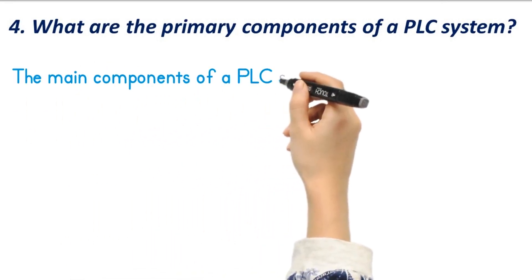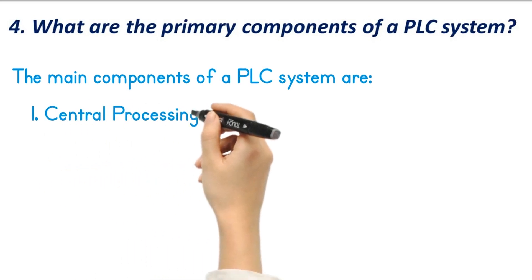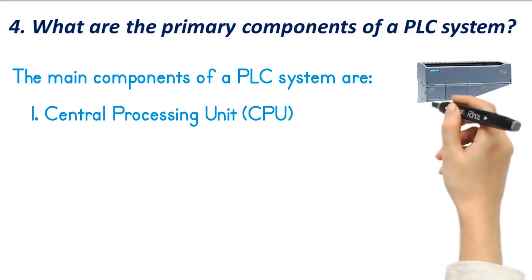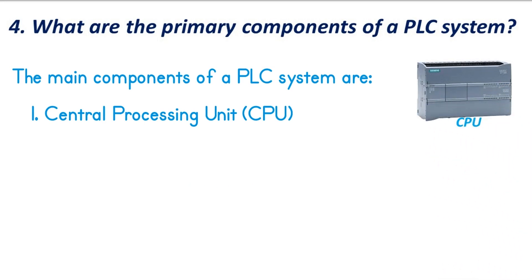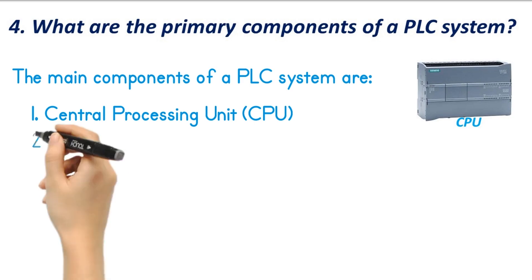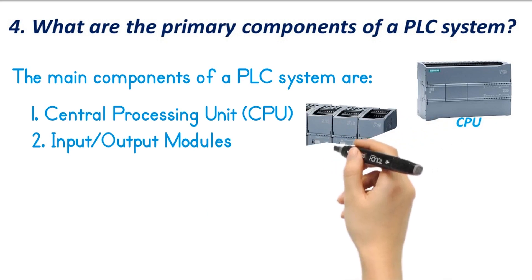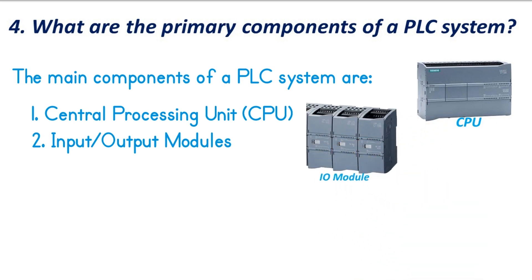The main components of a PLC system are: Central Processing Unit or CPU — the brain of the PLC, which executes the user program, processes inputs, generates outputs, and manages communication with other systems. Input-Output Module — input modules receive signals from devices like sensors and switches, while output modules send control signals to actuators, motors, and relays. Power Supply — it provides electrical power to the PLC and converts incoming power to the required voltage levels.